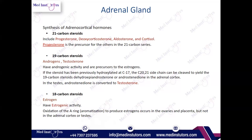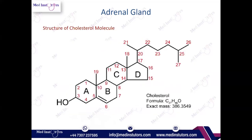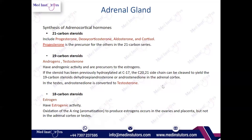The 19-carbon steroids are androgens and testosterone. These androgens are later converted into testosterone in the testes. The 18-carbon steroid is estrogen. A mnemonic to remember: boys are usually taller than girls, so testosterone has one more carbon number — 19. Girls are smaller, so estrogen has fewer carbons — 18. So the sequence is: 21 carbons for cortisol/aldosterone group, 19 for testosterone/androgens, and 18 for estrogen.